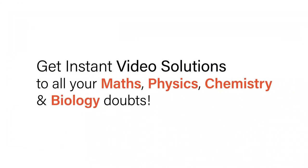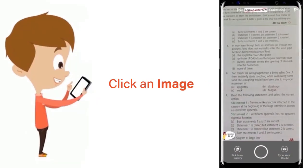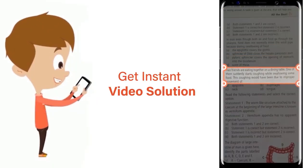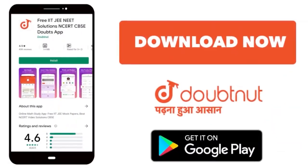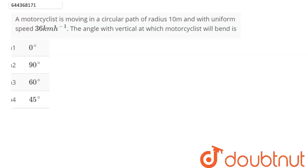With Doubtnet, get instant video solutions to all your maths, physics, chemistry and biology doubts. Just click the image of the question, crop it and get instant video solution. Download Doubtnet app today. The question is: a motorcyclist is moving in a circular path of radius 10 meters with uniform speed 36 km/h.